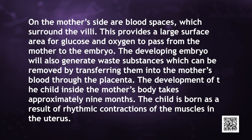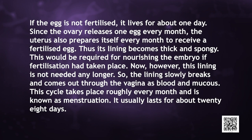The development of the child inside the mother's body takes approximately 9 months. The child is born as a result of rhythmic contractions of the muscles in the uterus. If the egg is not fertilized, it lives for about one day. Since the ovary releases one egg every month, the uterus also prepares itself every month to receive a fertilized egg — its lining becomes thick and spongy. If fertilization does not take place, this lining is no longer needed, so the lining slowly breaks down and comes out through the vagina as blood and mucus. This cycle takes place roughly every month and is known as menstruation.